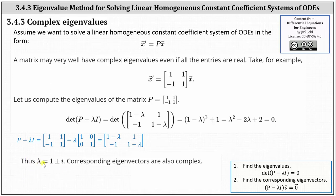Notice here we have two complex eigenvalues. Recall the next step is to determine corresponding eigenvectors by setting up the equation: the difference of P and lambda I times vector V equals a zero vector, and then we solve for vector V to determine a corresponding eigenvector. If we have complex eigenvalues, the corresponding eigenvectors are also complex. Let's work on this on the next slide.